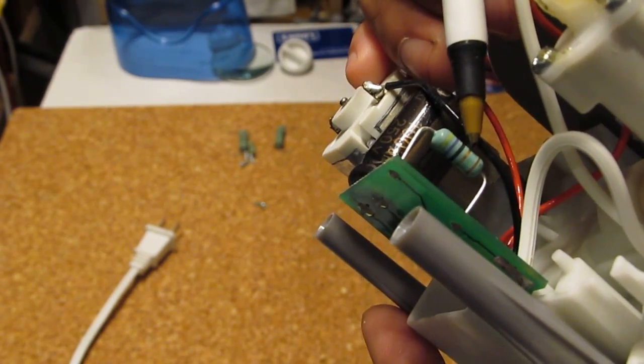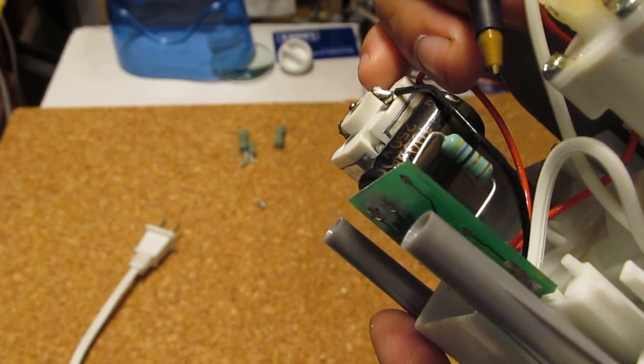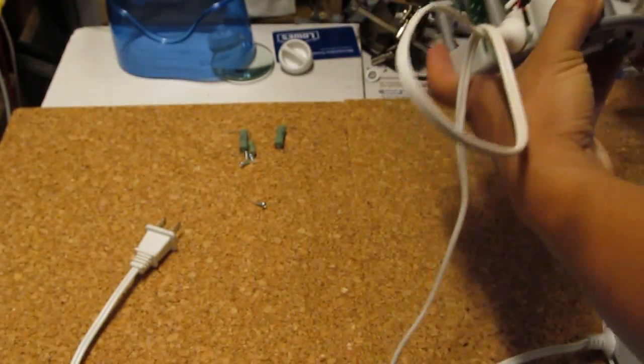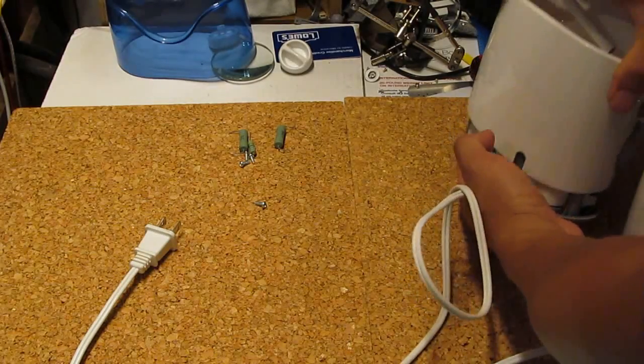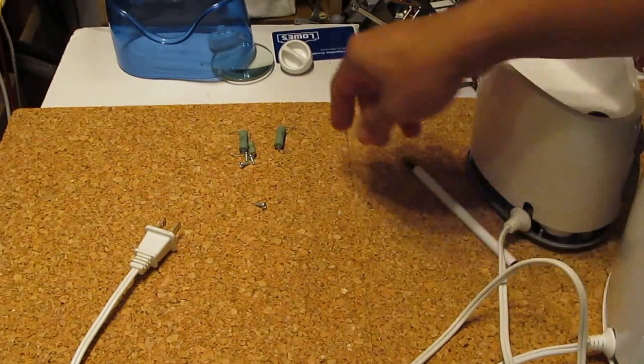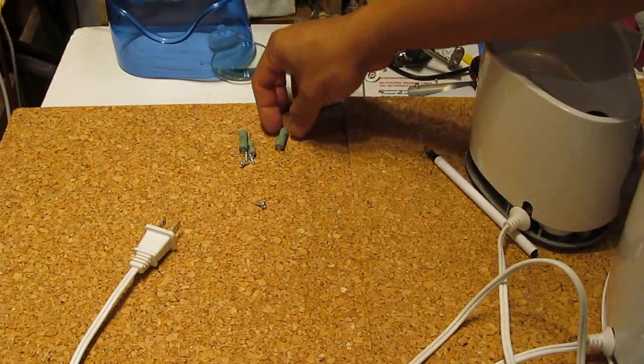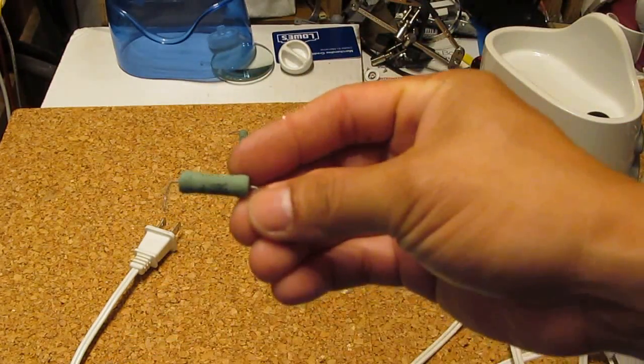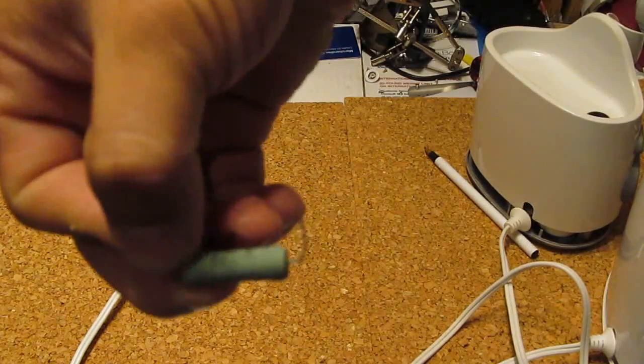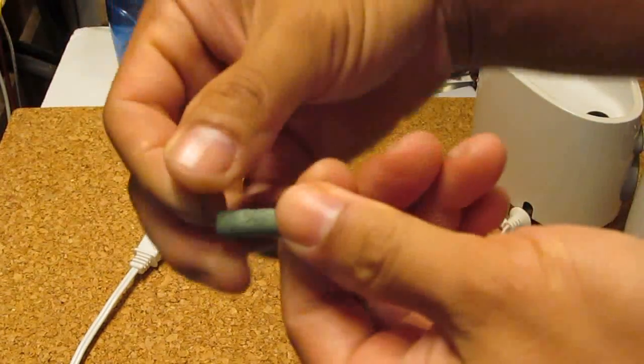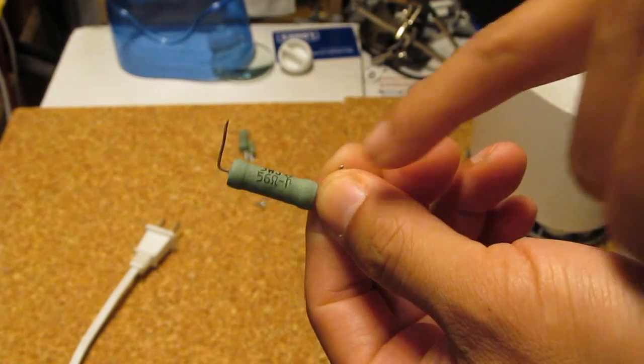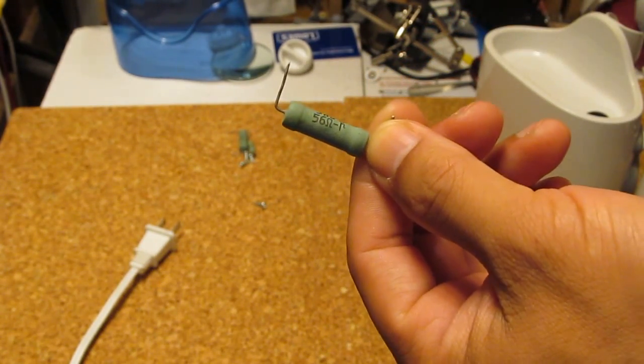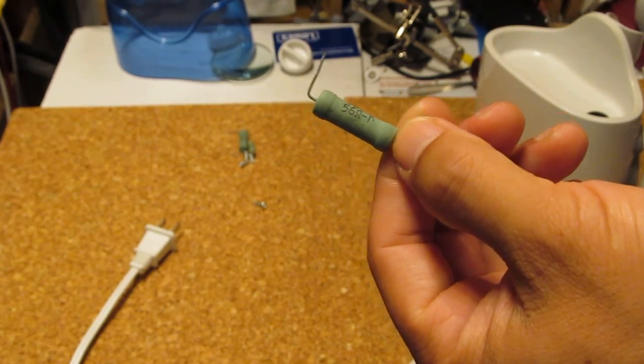So I searched some of my old TV boards and found some resistors. The closest I can find is this one here, so 56 ohm. Lucky this one is just printed right on the resistor, so I don't have to do color code.